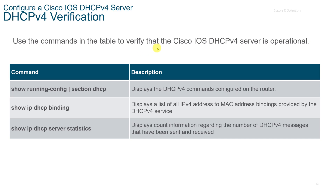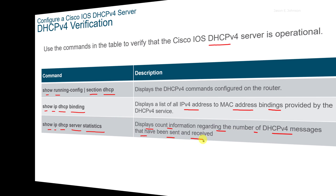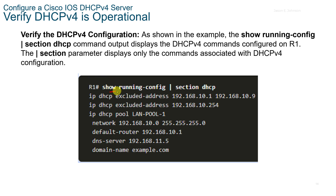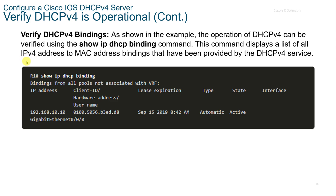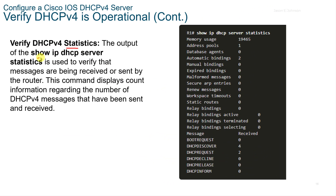We can use several commands to verify that the v4 server is operational. 'Show running-config | section dhcp' shows the configuration. 'Show ip dhcp binding' displays a list of all v4 address to MAC address bindings. 'Show ip dhcp server statistics' displays count information regarding the number of v4 messages sent and received. These commands let us verify the DHCP bindings and confirm messages are being processed by the router.